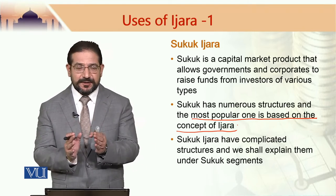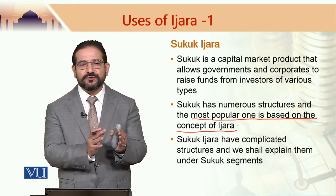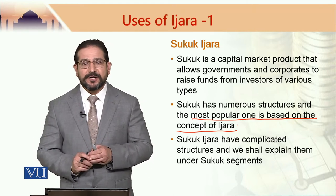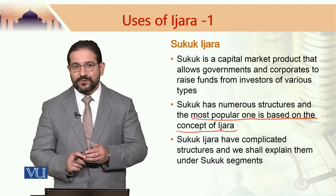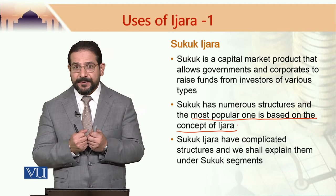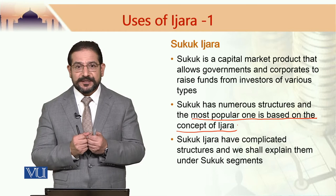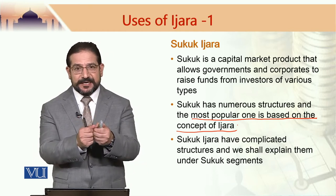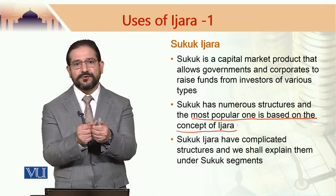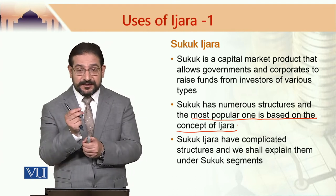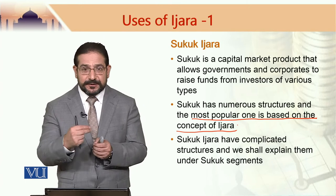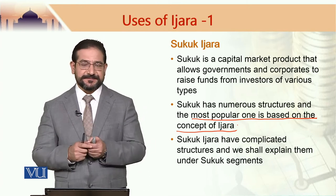That special purpose vehicle would then lease that asset back to the obligor, and that special purpose vehicle issues Sukuk certificates which are bought by the investor. So we have this Ijara component in Sukuk Ijara — an identified asset which is owned by the obligor, i.e., the party wishing to raise additional funds. It sells that asset to an SPV, and that SPV leases it back to the obligor. That leasing part is actually the Ijara component and this is central to Sukuk Ijara because this lease component generates frequent returns for the investor.